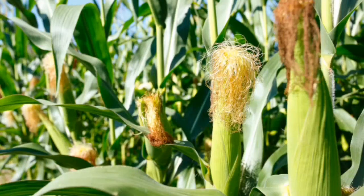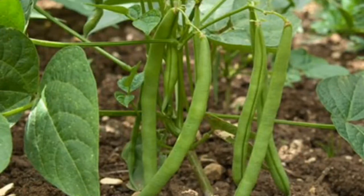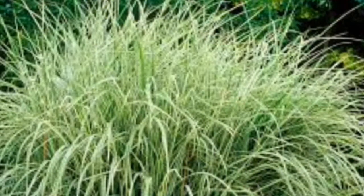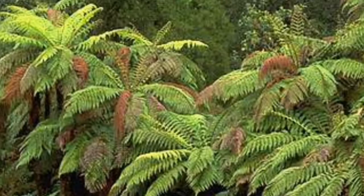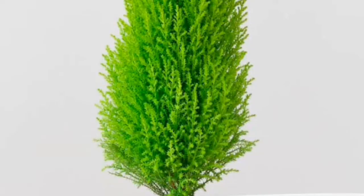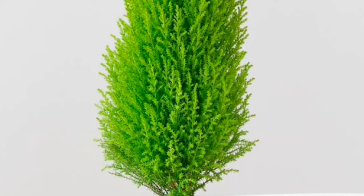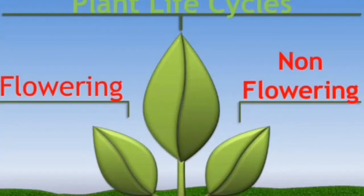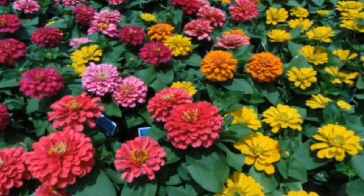Examples of green plants include maize, beans, grass, the acacia plant, fern, cypress, and many more. In this group, some green plants produce flowers and they are referred to as flowering plants. Flowering plants can either be monocotyledonous or dicotyledonous.